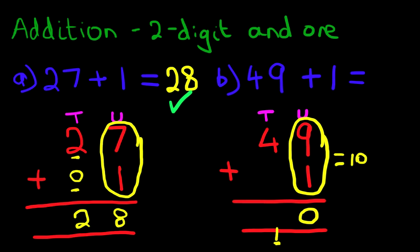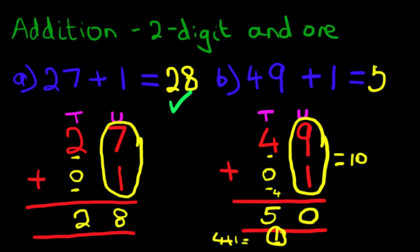Now we're going to add the tens. We've got 4 here, plus there is nothing here, so 4 plus 0 is 4. We also have to add the 1 over here — this is the most common mistake, don't forget this. 4 plus 1 is 5. And we have our answer: 49 plus 1 is 50.